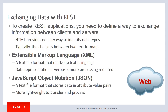The second format is JavaScript Object Notation, or JSON. This is also a text file format for storing data, but it doesn't use tags — it uses curly braces, commas, and name-value pairs to store the data. It tends to be more lightweight and easier to transfer and process, so it has become much more popular than XML for developing applications.